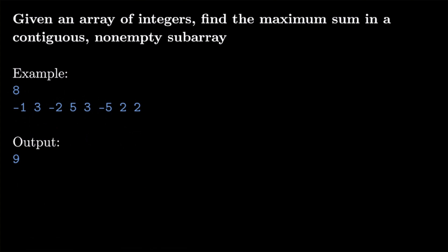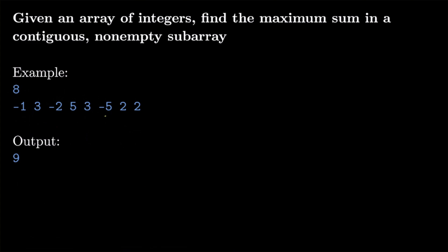If I select the subarray from negative 5 to 2 covering those three elements, the sum would be negative 1, because negative 5 plus 2 plus 2 is negative 1. The point is to find the maximum possible one, and it turns out the maximum sum is 9 — we get that by taking 3, negative 2, 5, and 3, which add up to 9. So how do we go about solving this?